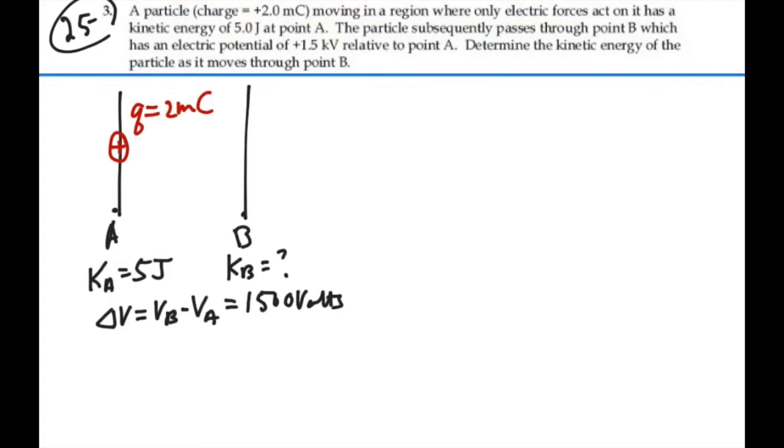Well, since we know the change in potential, let's find our change in potential energy. Change in potential energy would be the charge times the change in potential. So in this case, that would be 2 millicoulombs times 1,500 volts. And so that would be 1.5 kilovolts times 2 milli, so that's going to be 3 joules.